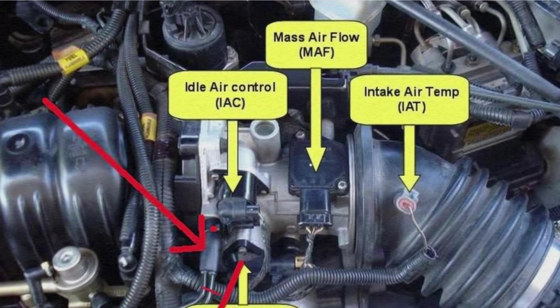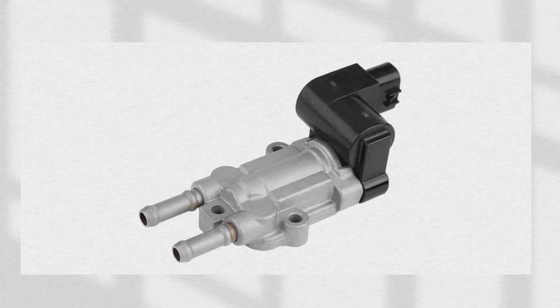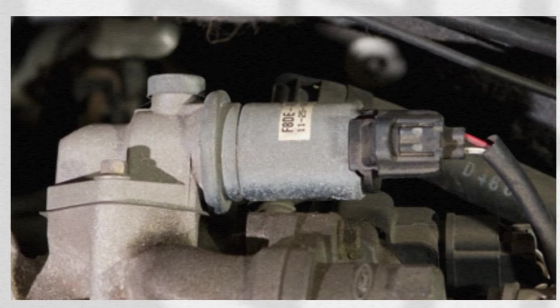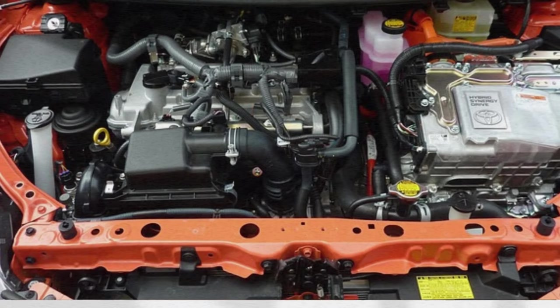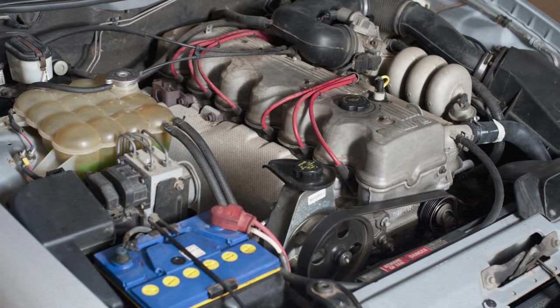What is an idle air control valve? Before we dive into resetting an IAC valve, let's first understand what it is. The idle air control valve is a component of your car's engine management system that regulates the amount of air that enters the engine when the throttle is closed. It simply controls the idle speed by adjusting the amount of air that flows into the engine. When the throttle is closed, the engine needs a certain amount of air to keep running smoothly, and this is where the IAC valve comes into play, helping to maintain a steady idle speed.